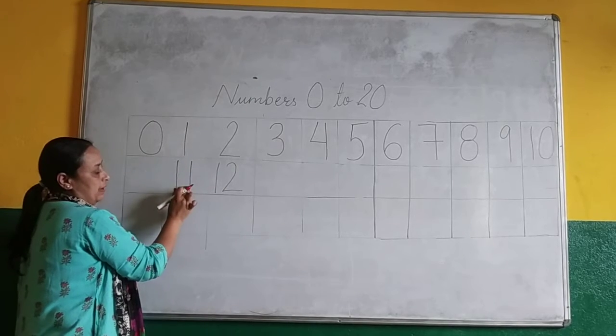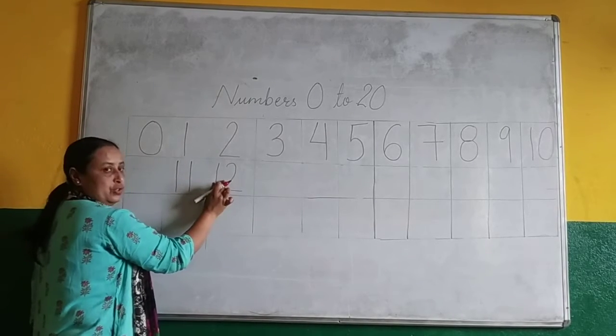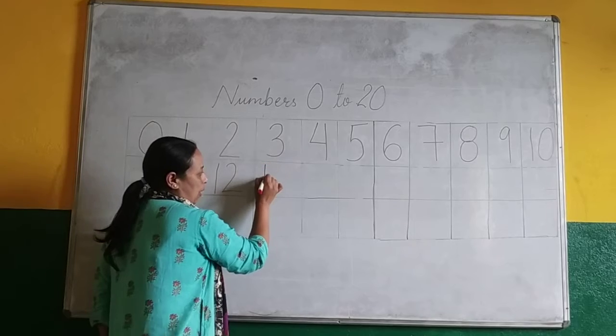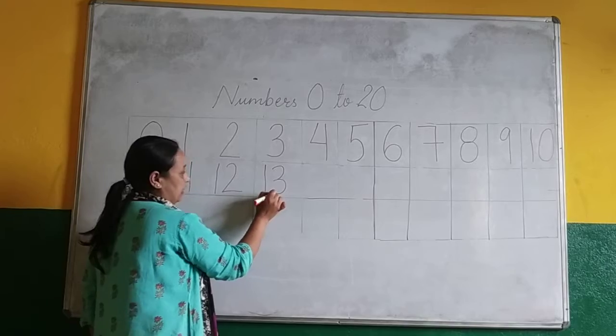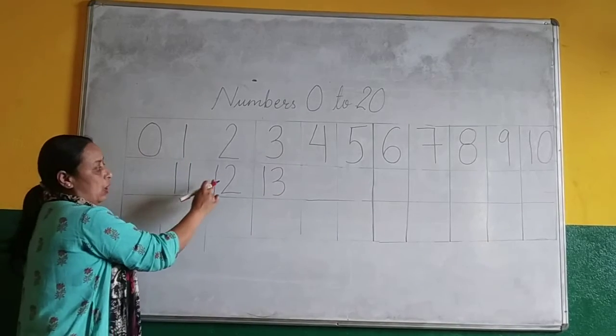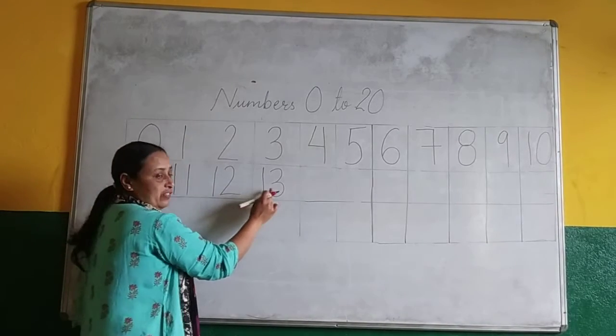1, 1, 11. 1, 2, 12. Then write down. 1. What do you have to write? 3. 1, 3, 13. 1, 11, 1, 12. 1, 3, 13.